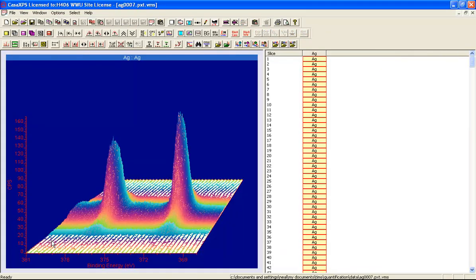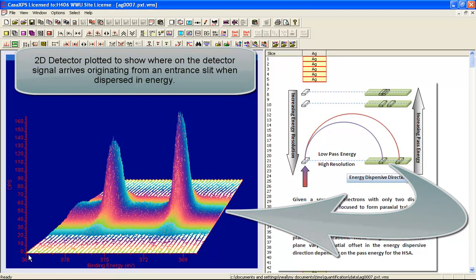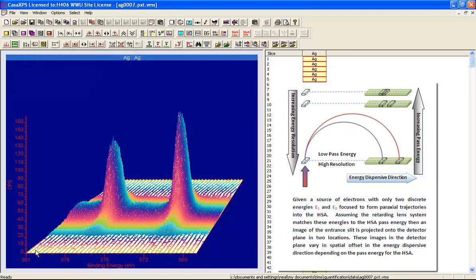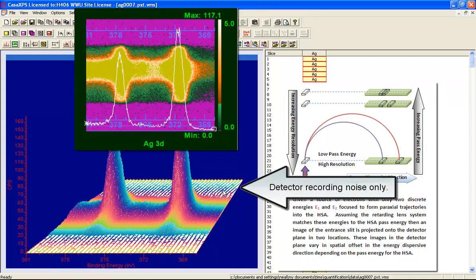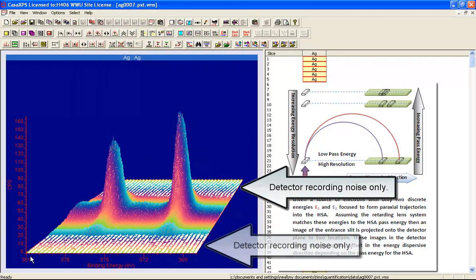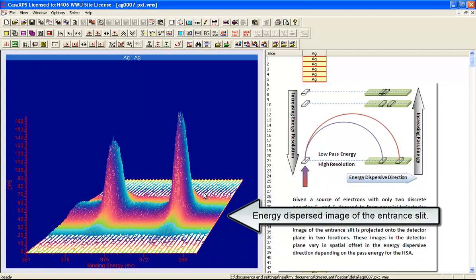If we looked at the signal using a 2D detector, then we would have an energy dispersive direction and a non-energy dispersive direction, and each one of these lines represents a different detector in the snapshot mode data. In order to calculate that snapshot signal we would sum along all of these lines. You can see that the signal is not necessarily evident in all parts of the detector plane. In this detector, only signal has arrived along a band that corresponds to the slit that was used at the entrance to the HSA.